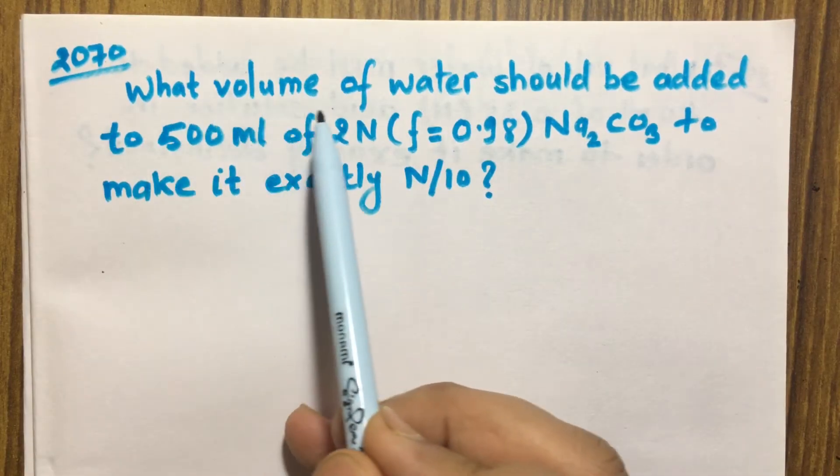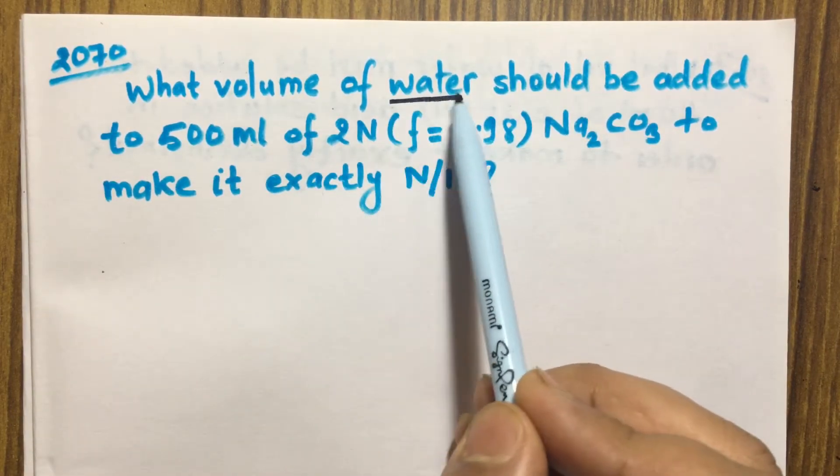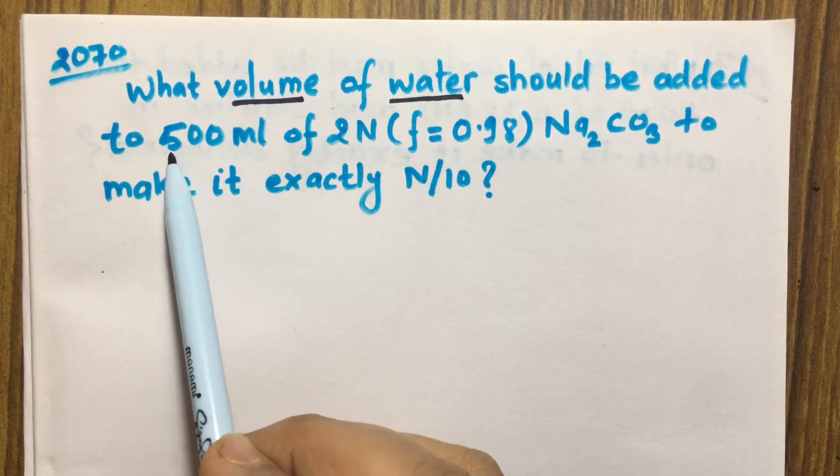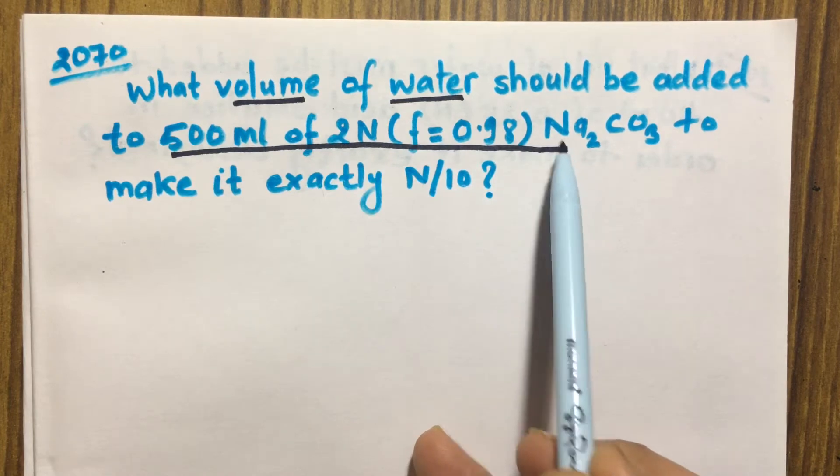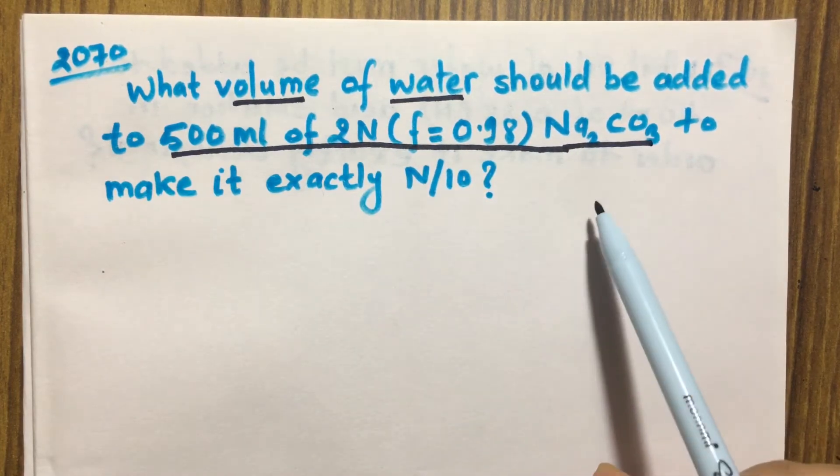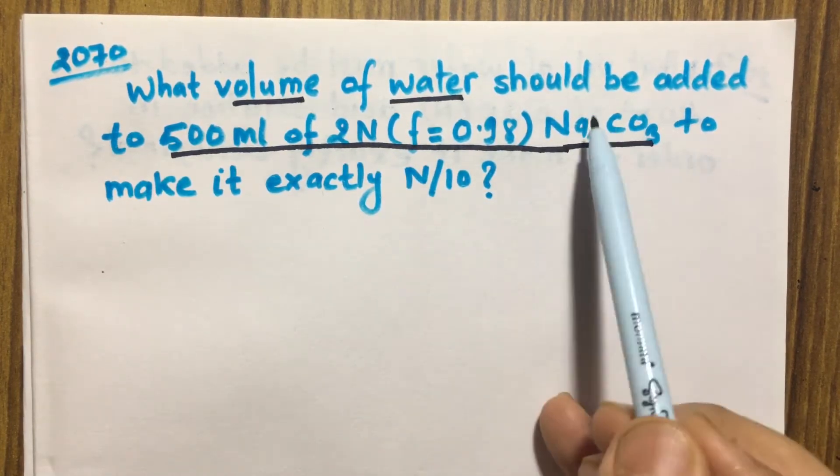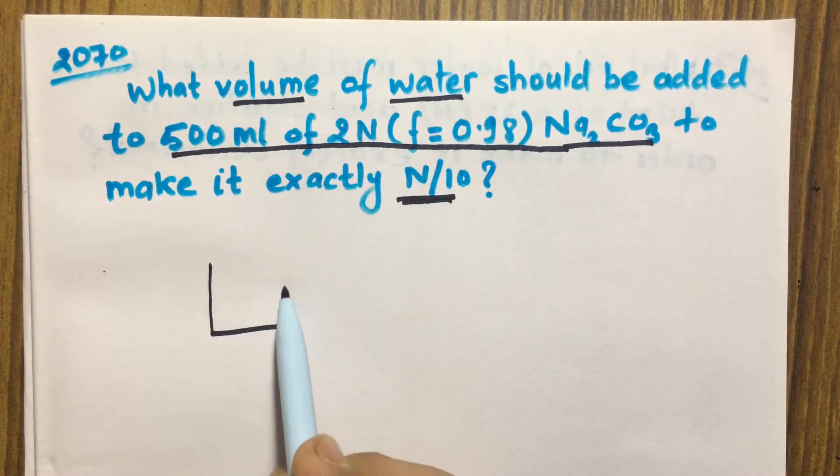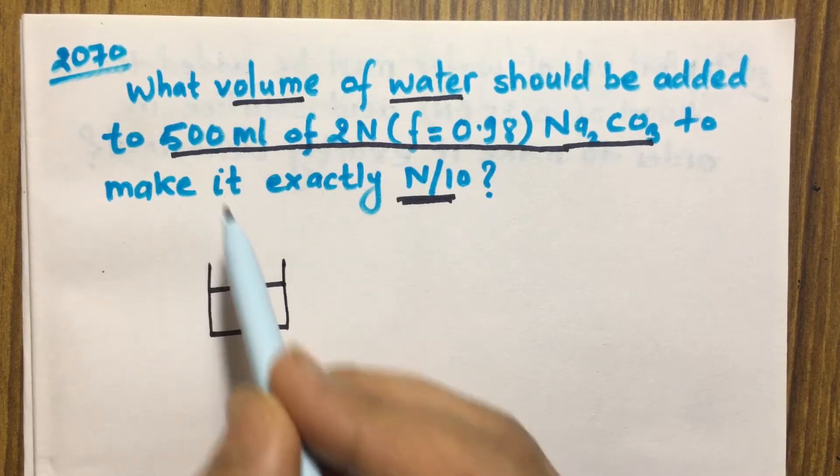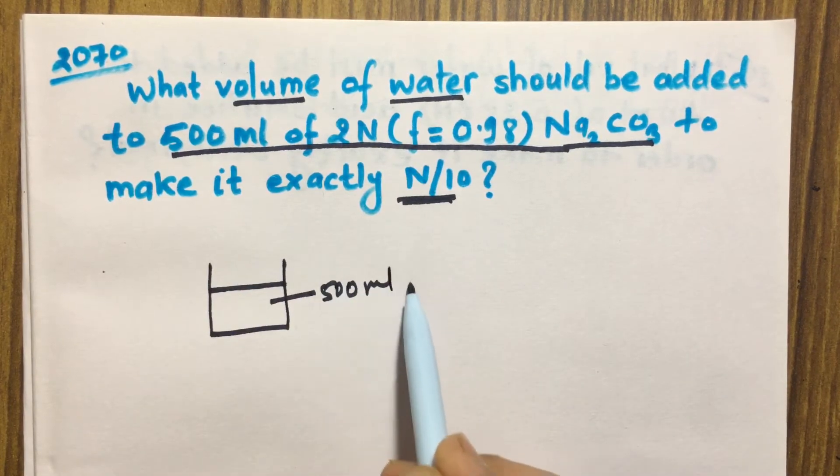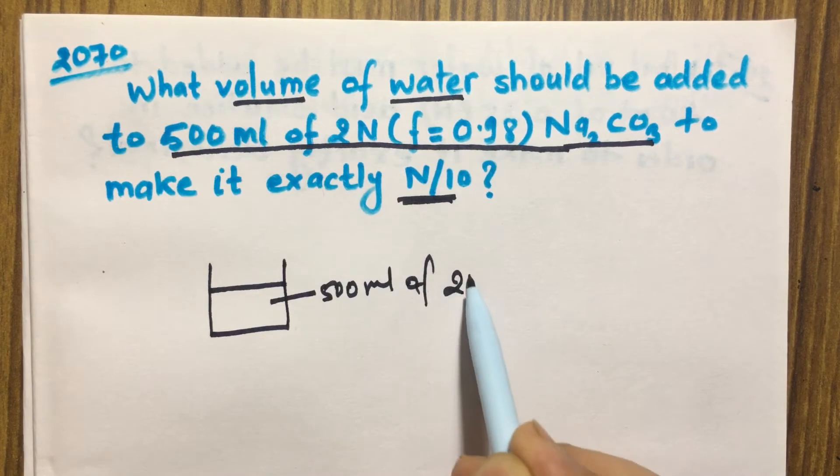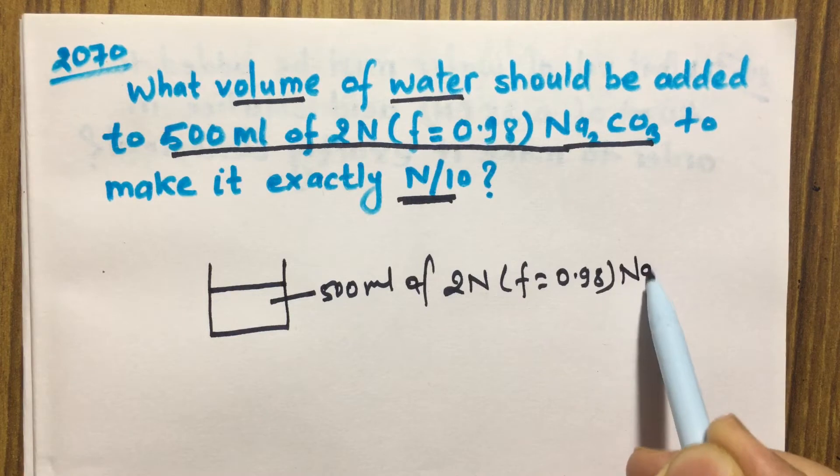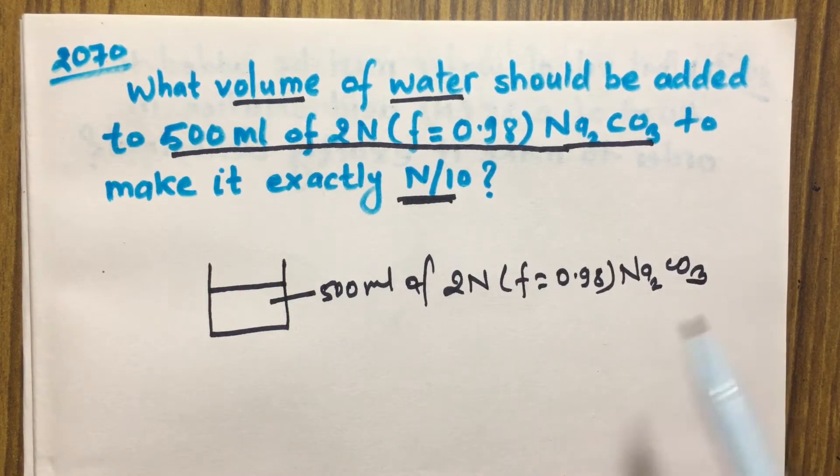What volume of water should be added to 500 ml of 2N with factor 0.98 sodium carbonate to make it exactly 0.1 normal? Suppose we have 500 ml of 2N with factor 0.98 sodium carbonate solution.